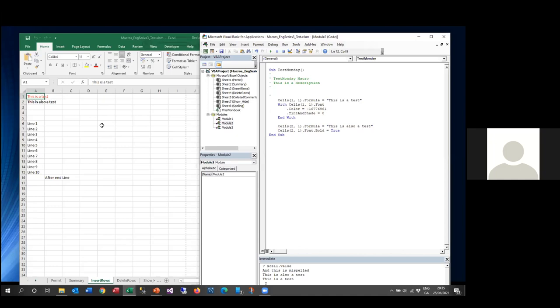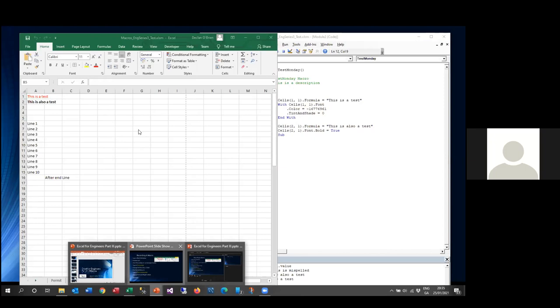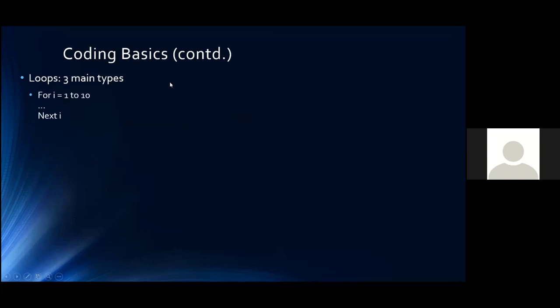Now we'll look at loops. There are essentially three main types. Some you use because they're your favorites, some because they're handier for certain situations — it's horses for courses, and there are many ways to achieve the same objective. The first is For i = 1 to 10: execute a piece of code, hit Next, go back up. The variable i starts at 1, runs the code, comes back, i becomes 2, and so on — the code runs 10 times.